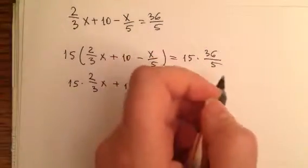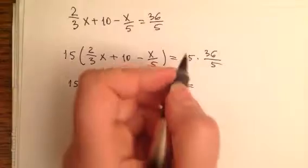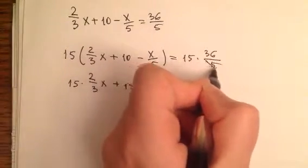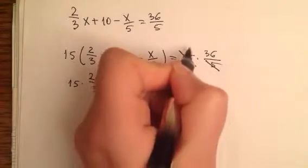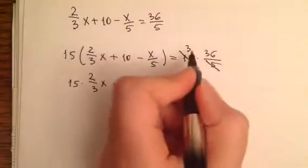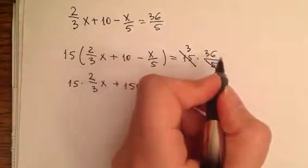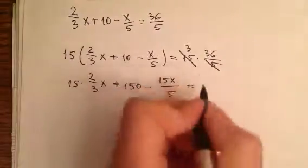Here I can simplify it a little bit by dividing both sides by five. If I divide this by five, here I will have just one, and here I will have three. So three times thirty-six is one hundred eight.